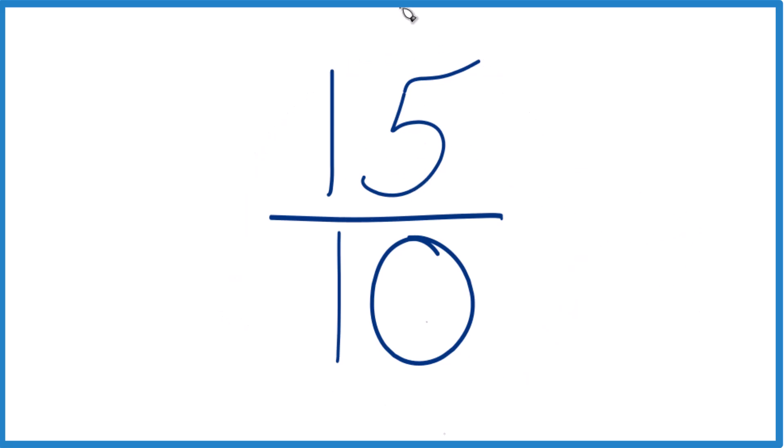So what we want to do when we simplify this is find a number that goes into 15 and 10 evenly. So we want a whole number that goes into both 15 and 10. You probably can tell that 5 goes into 15 and 5 goes into 10.